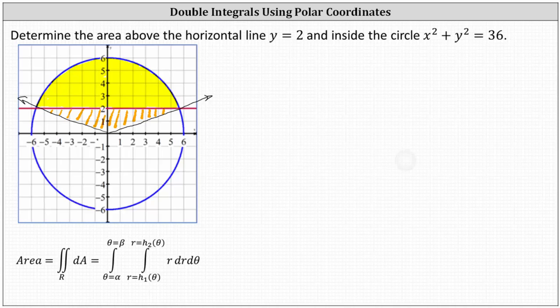Let's begin to set this up. We have the area is equal to the double integral over the region r of r dr d theta. And now to determine the limits of integration for r and theta. The limits of integration for r are going to be from zero to six because the radius of the circle is six.